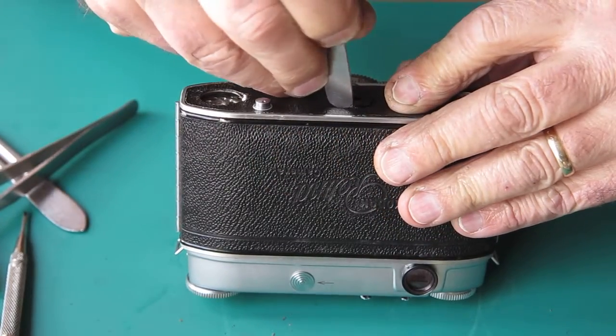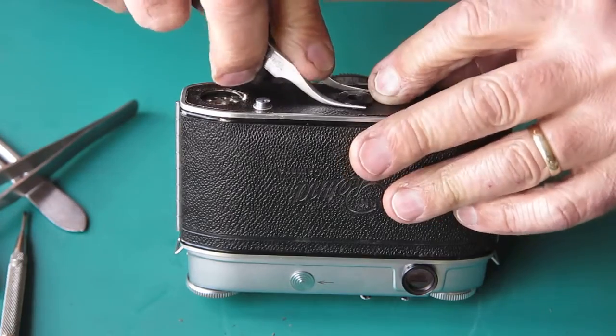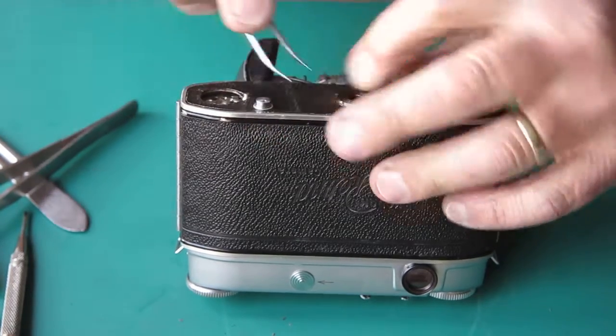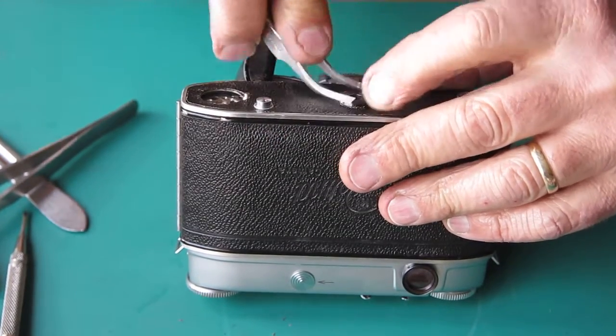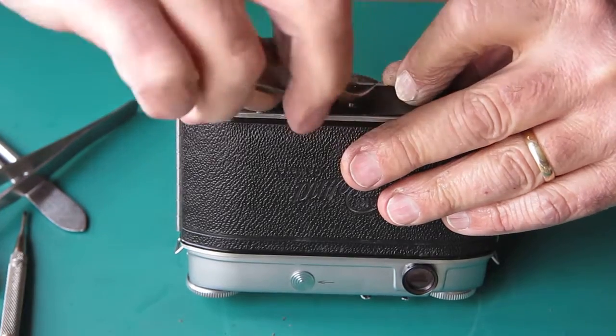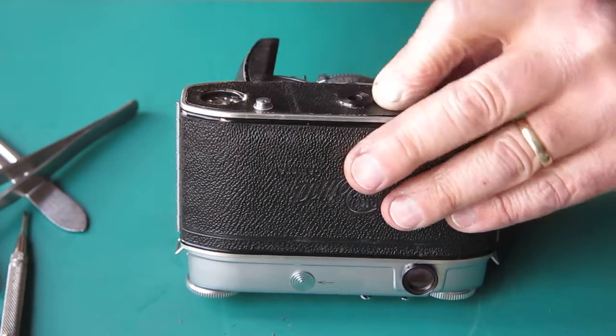That means that they're reluctant to sit down flat around raised bosses like this around the rewind knob or around the central boss here. So I've got to make sure that that leatherette is seated as flat as possible there because it wants to lift up.